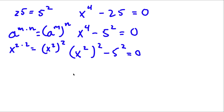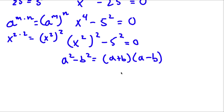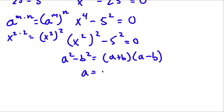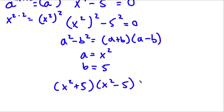Now if I have something in the form a squared minus b squared, this is equal to a plus b times a minus b. And in this case, a is equal to x squared and b is equal to 5.